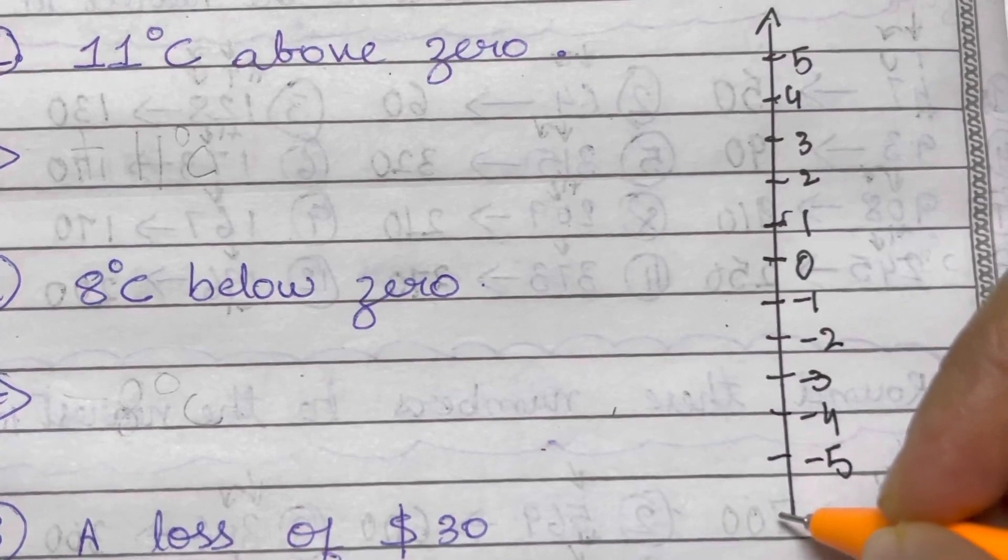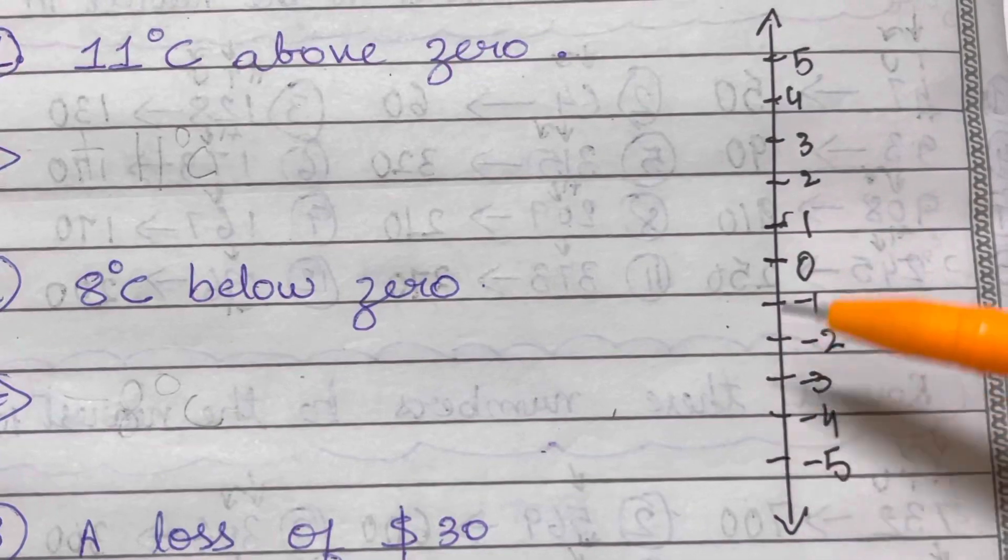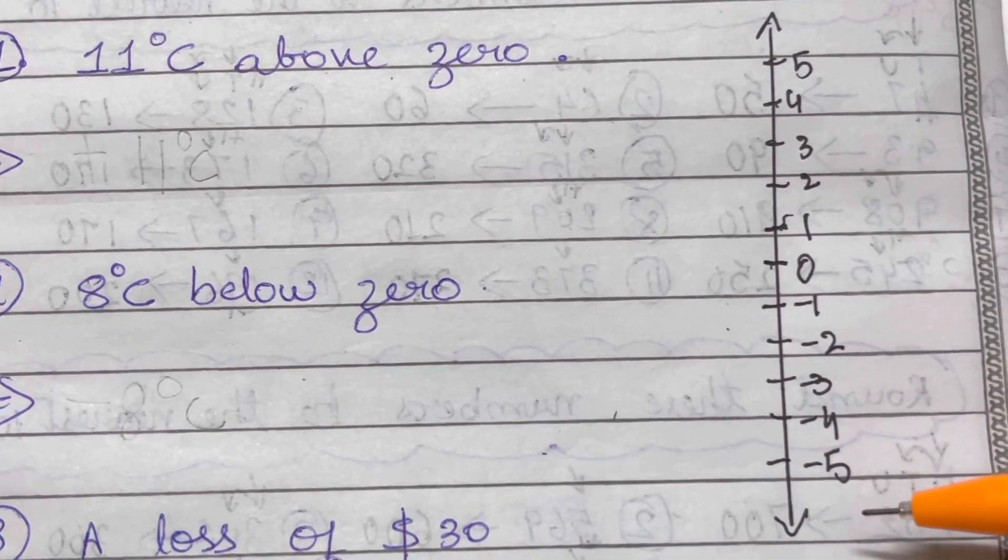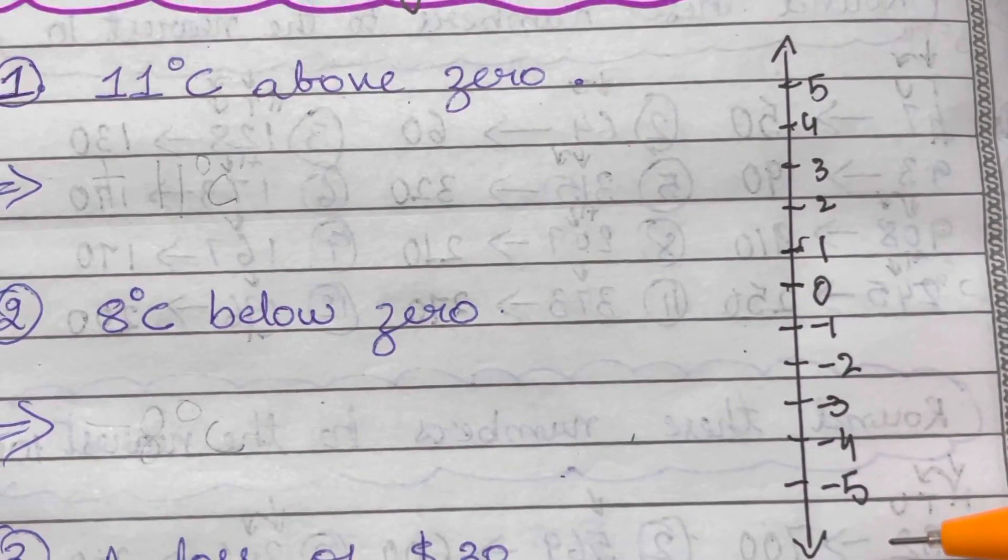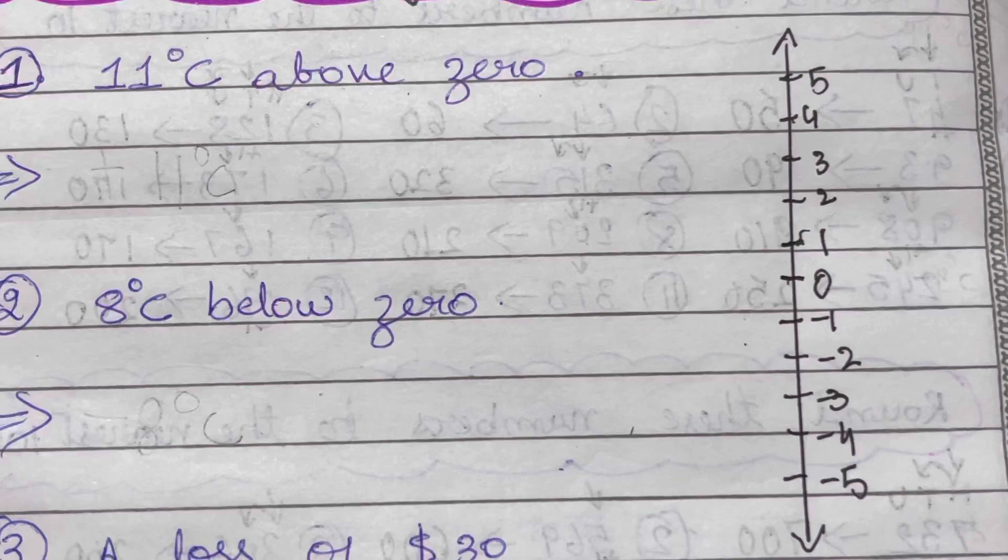This is how we write the integers. All the numbers above zero are positive, all the numbers below zero are negative. And basically you can find this in temperatures or profit and loss, so we are just going to write the directed numbers which have a sign and both direction.